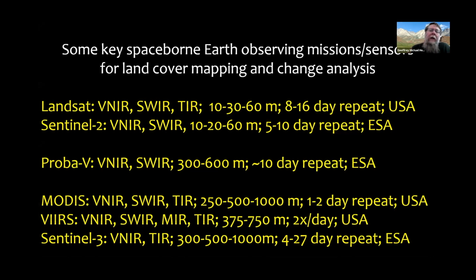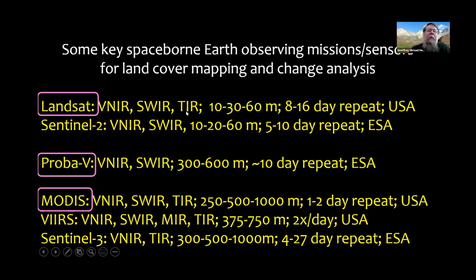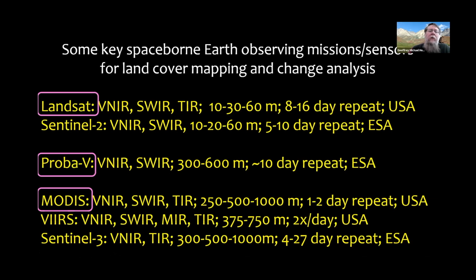Here are some key missions and sensors for land cover mapping and change analysis, showing the parts of the electromagnetic spectrum they're sensitive to, their spatial resolutions, temporal repeats, and who operates the satellites. Today we'll primarily look at Landsat and Proba-V — Proba-V is from Europe. MODIS is a coarser resolution satellite many people have worked with for many years, though both MODIS sensors will within the next 24 months no longer be in operation, with follow-on sensors replacing them.